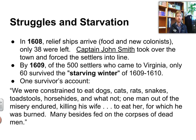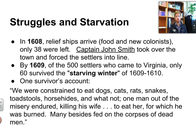In 1608, after a year there, relief ships arrived with food, supplies, and new colonists. By the time that ship got there, only 38 people were left. At that time, Captain John Smith took over the town and forced the settlers into line, taking a military role to try to organize things. However, by 1609, of the 500 settlers who had come to Virginia, only 60 survived what was called the starving winter of 1609–1610, a particularly harsh period when people didn't have stockpiles of food and mostly starved to death.